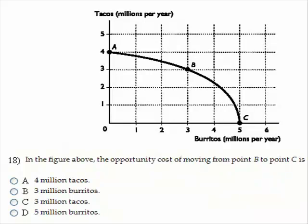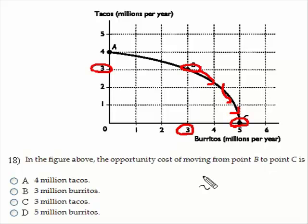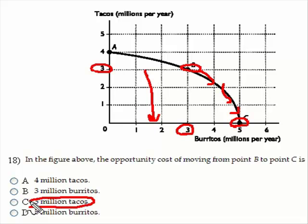Let's take a look at figure 18. It says: in the figure above, the opportunity cost of moving from point B to point C is what? At point B we have 3 million tacos and 3 million burritos. If we move down the frontier all the way to the bottom to point C, then we'd be giving up all of these tacos. So how many tacos is that? 3 million. So the answer is C: 3 million tacos.